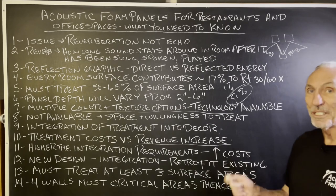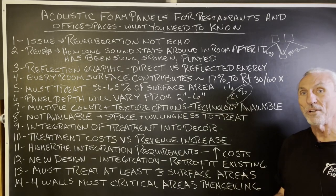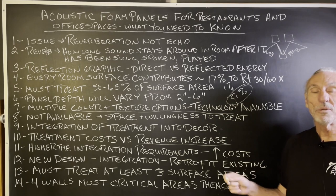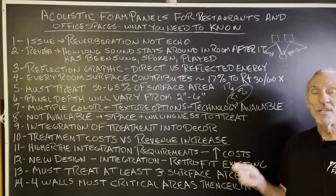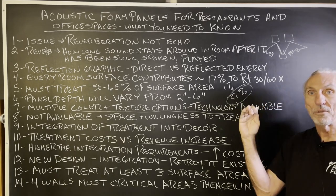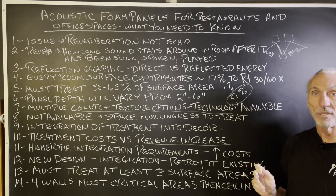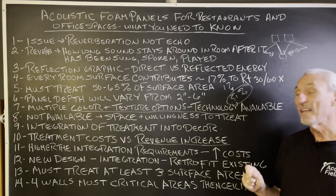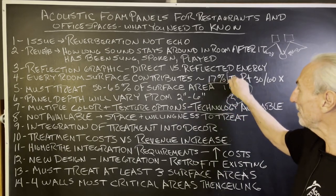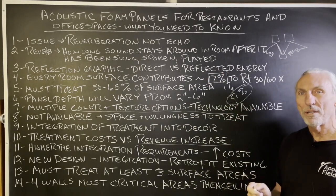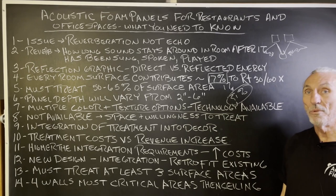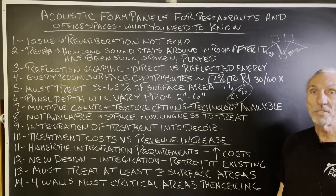When treating restaurants and offices, you must treat at least three surface areas. The side walls are the most important surface areas to treat because our ears are vertical on our heads — we hear in a horizontal domain — so we hear the four walls the most. We want to treat those as best we can. When I say each surface area contributes about 17% to the problem, it's really weighted more toward the four walls. I know those are the most visible, so you have to decide what's most important to you.